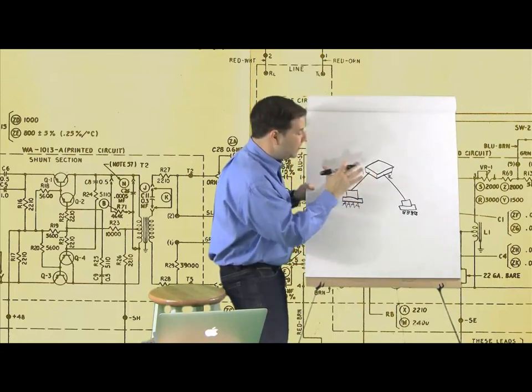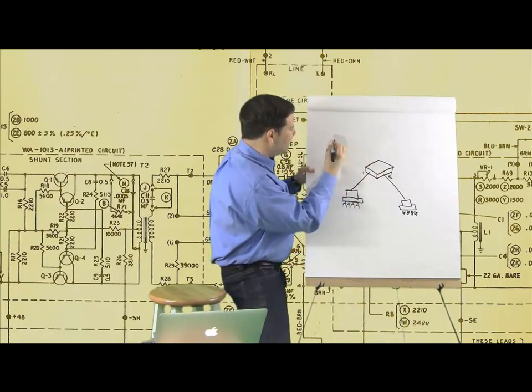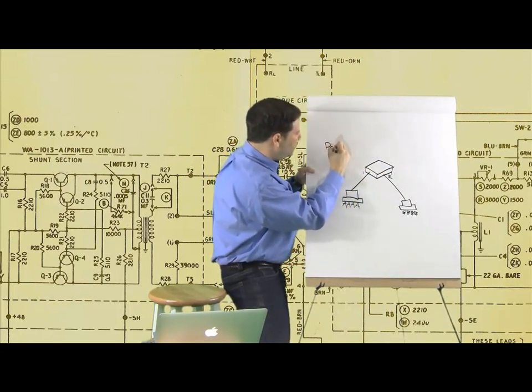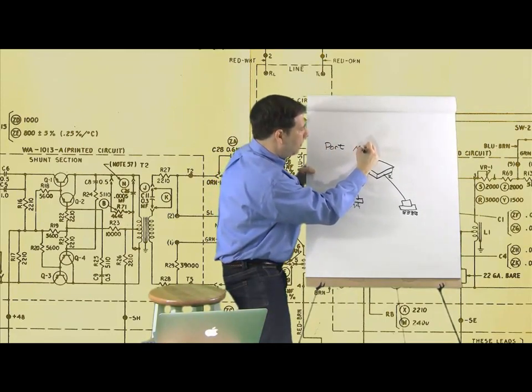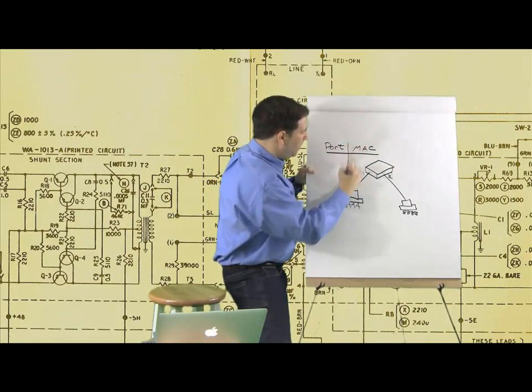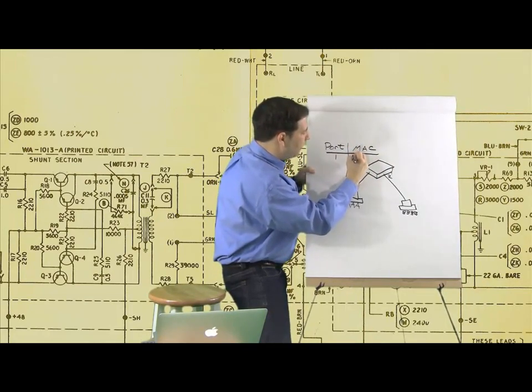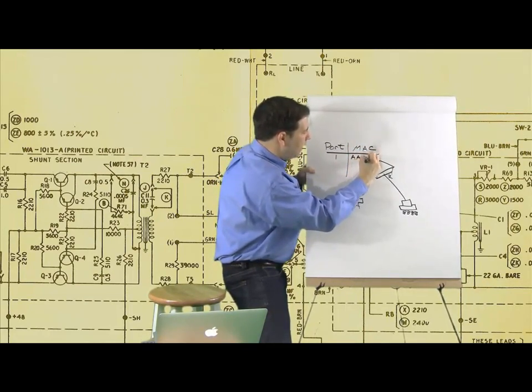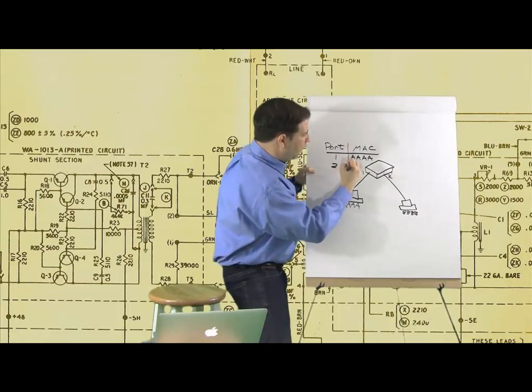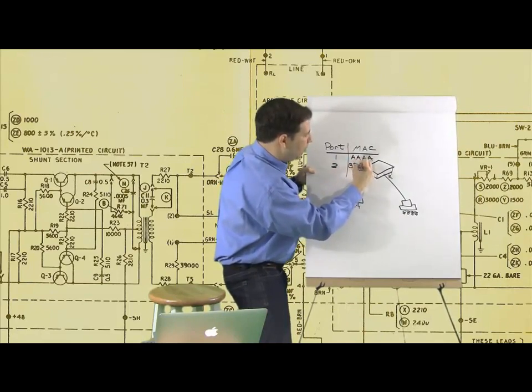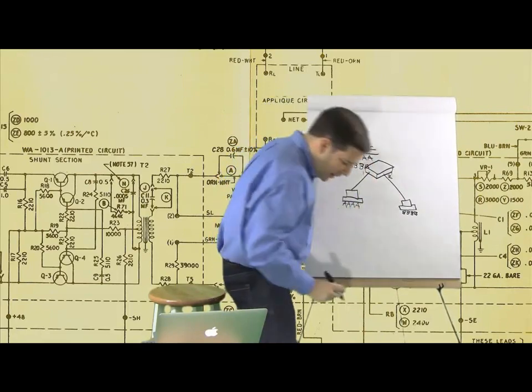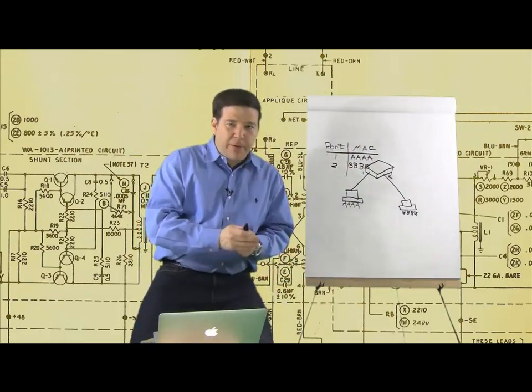And the MAC address table is going to be constructed inside of the switch like this. We're going to say, for this port, we've got a corresponding MAC address. For port 1, we've got MAC address AAAA. And for port 2, we've got MAC address BBBB.